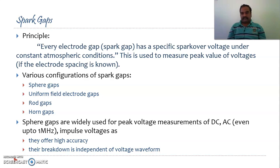There are different types of sphere gaps based upon the structure of the electrodes employed — just like your parallel plate capacitor, the shape of the electrode determines the gap type. There are different types: sphere gaps, uniform field electrode gaps (very similar to your parallel plates), rod gaps, and horn gaps, where the electrodes are in the form of a bull horn.